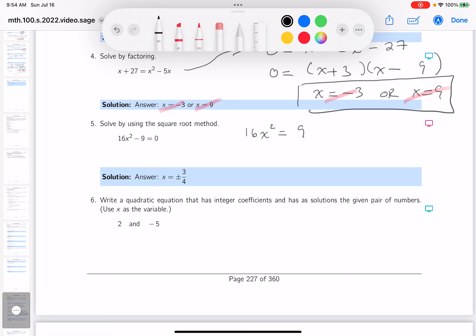I'm going to divide both sides by 16 now. We're going to get x squared equals 9 sixteenths.